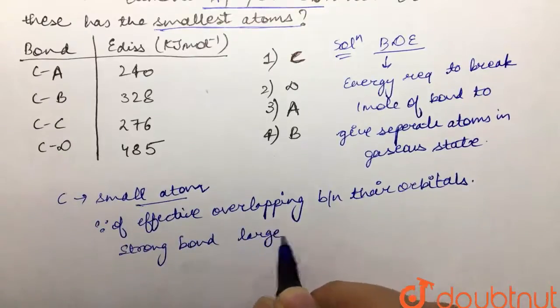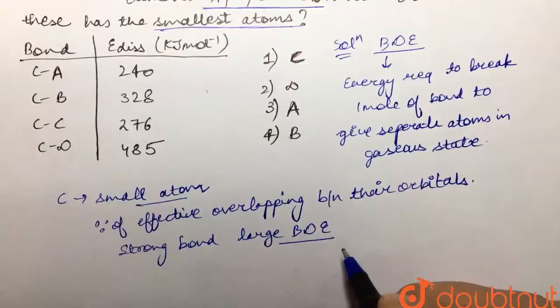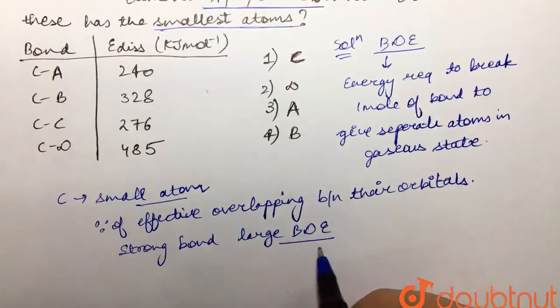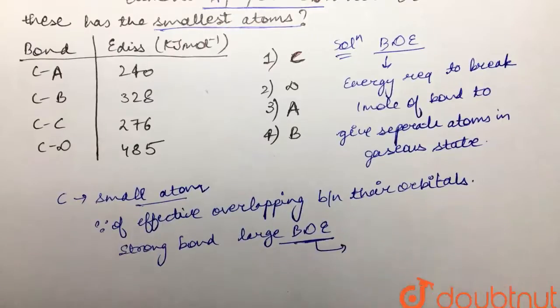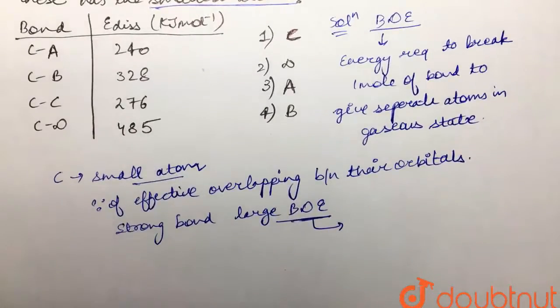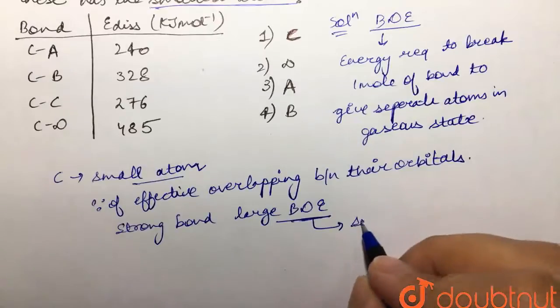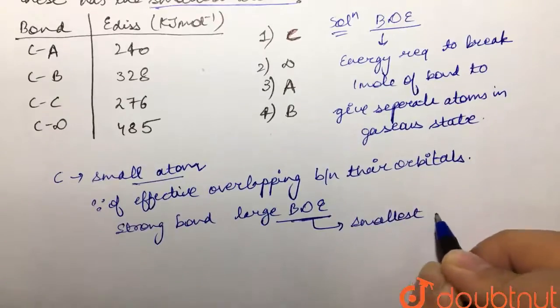large bond dissociation energy, because that bond will be strong. And hence the maximum bond dissociation energy would be in the one that would have the smallest atom bonded with carbon.